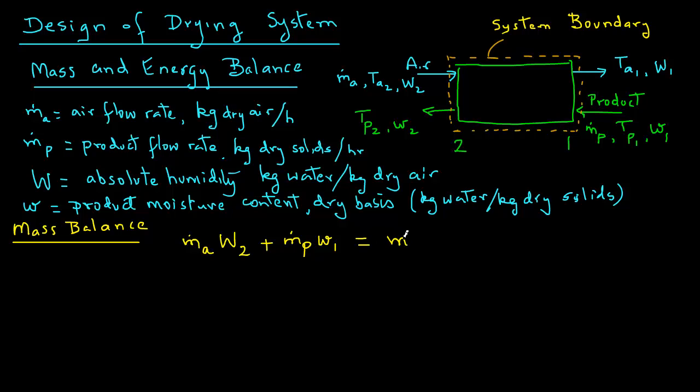Then there is moisture leaving with the air, so it's m_a times W1, plus we have moisture leaving with the product, and so that is m_p times w2. So that is the balance for the amount of water entering and exiting the system.